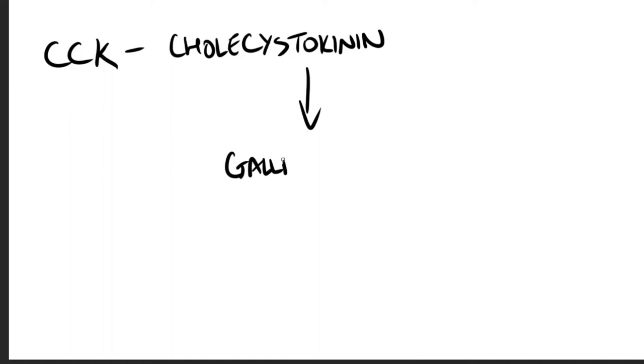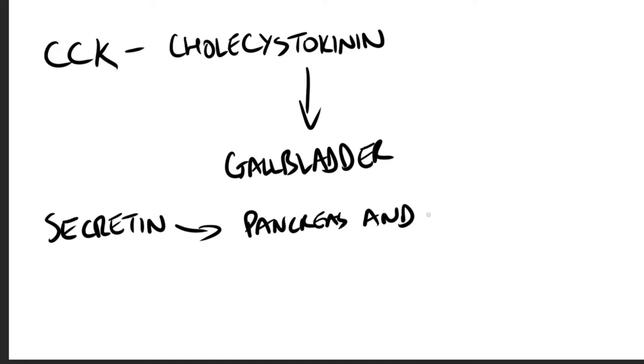Other intestinal cells produce another small peptide hormone known as secretin in response to the low pH of the chyme entering this intestine. Chyme is the partially digested food. Secretin causes the pancreas and the liver to release a solution rich in bicarbonate.